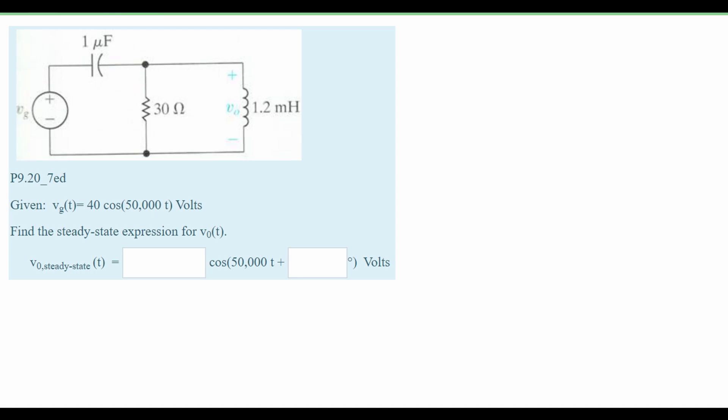In this problem we are given the following circuit diagram. We are also given this information down here and we need to use it to find the steady state expression for our V₀(t).